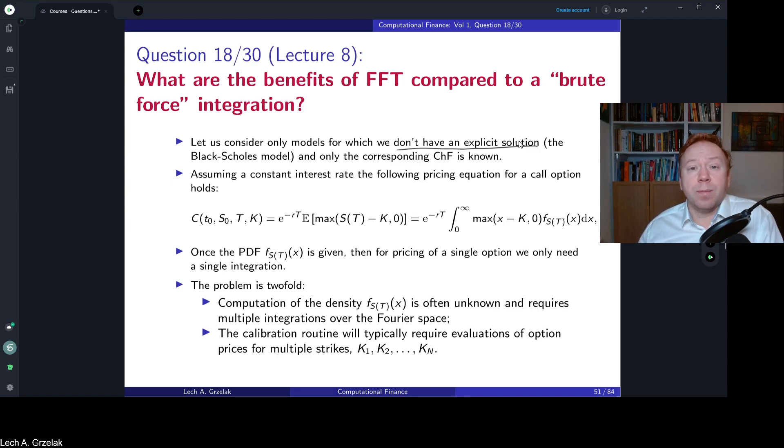Consider a very simple case where we have constant interest rates. Then we know that the pricing equation using the Feynman-Kac is essentially only the expectation of the future payoff which is discounted to today. We can also write it in the integral form. Writing in the integral form is maybe a little bit more beneficial because we can see explicitly the density of the stock at maturity time T.